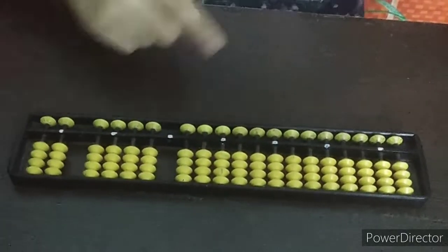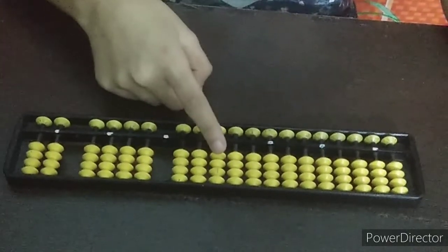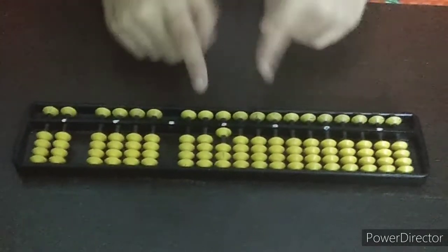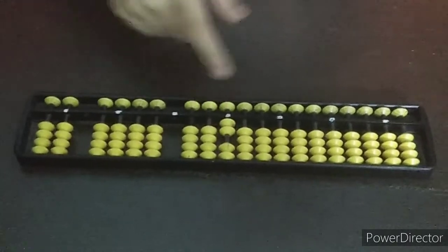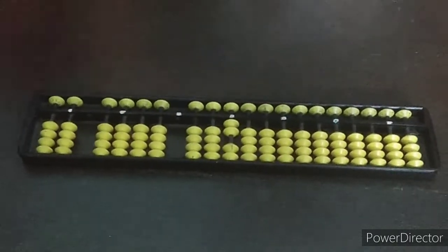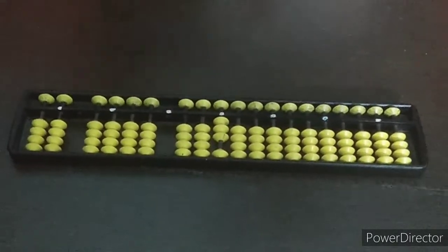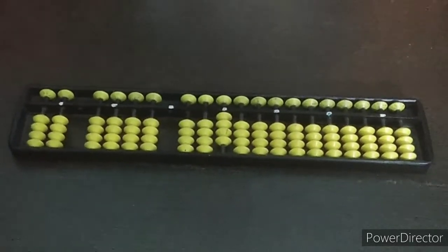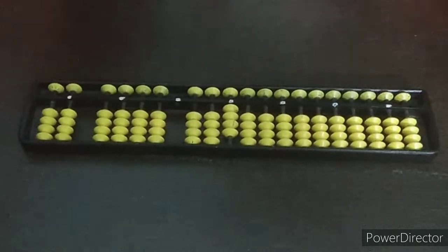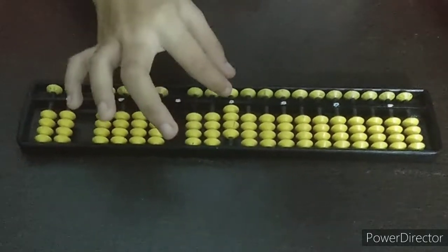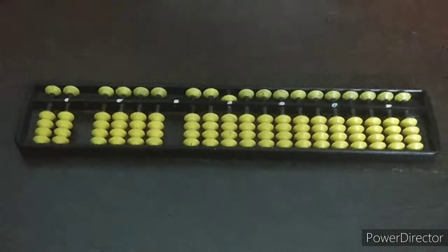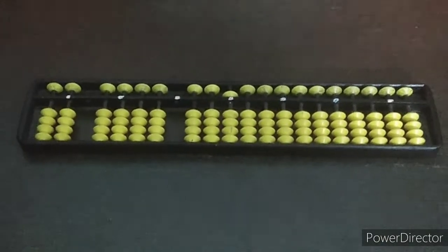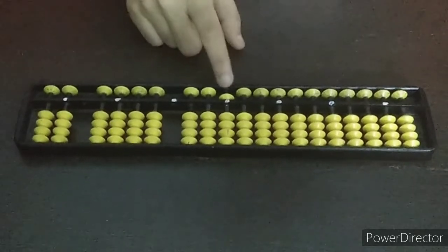So when we push up one beat, the lower one, it is 1. The second one, it is 2, plus 1 is 3, and plus 1 is 4, and then 5. 5 is very simple. Now we just have to push them down. I said that the upper beads value is 5 each. So this is 5.